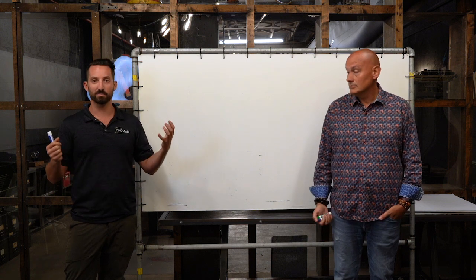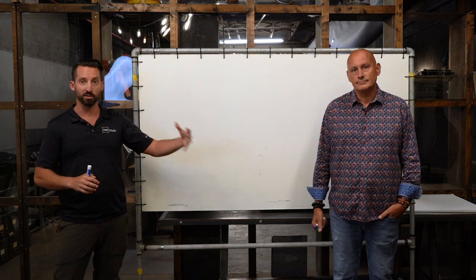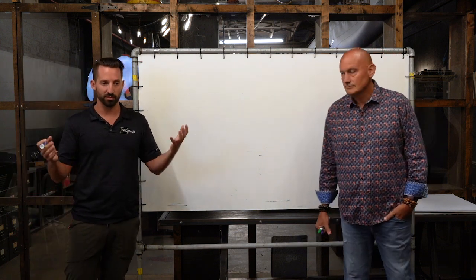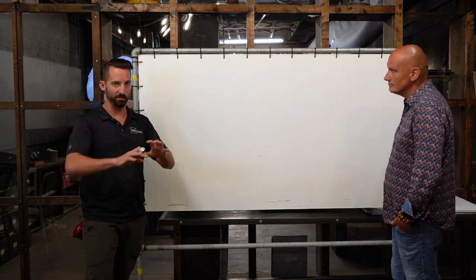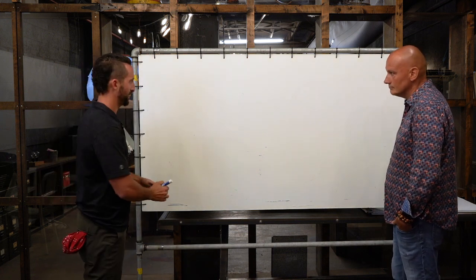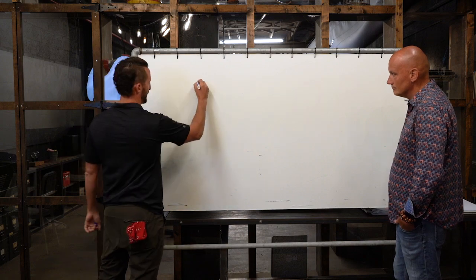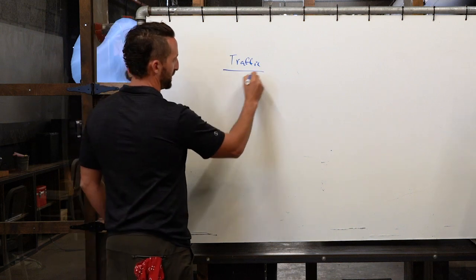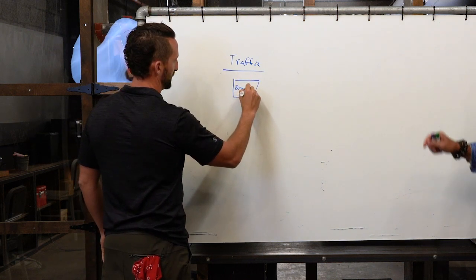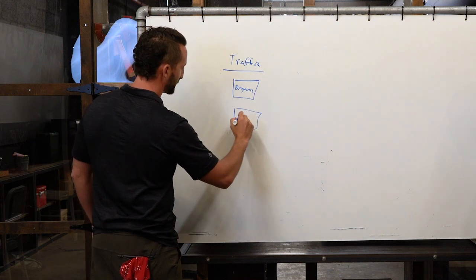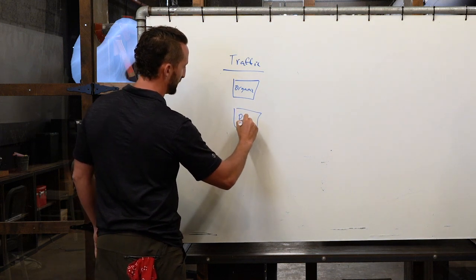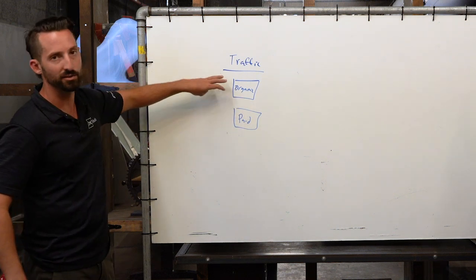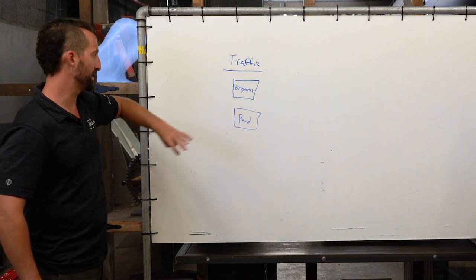So we're going to get to the answers on what we think you should be doing moving forward. First, I wanted to break down just the simple funnel that most tourism companies are using. This is a very basic funnel - funnels can get complex, but at the core of everything, this is how it all works. You're essentially trying to take traffic from two different sources: you have organic and you have paid. This is primarily targeted towards hotels.